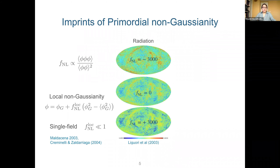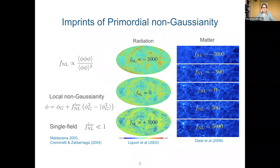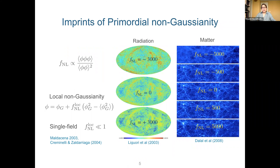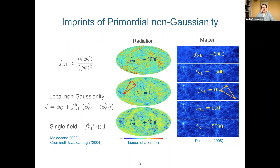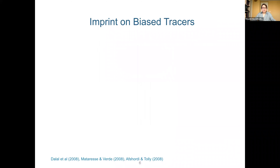Looking at the distribution of radiation and matter, having local-type non-Gaussianity with positive fNL would lead to more structure in the hot spots of the CMB, which are over-dense regions, while in the dark matter distribution, positive fNL would result in a larger number of massive halos and a delay in the formation of under-dense regions. By measuring the three-point function of radiation or matter fluctuations, we can set constraints on and infer the amplitude of the primordial bispectrum. When we talk about bias tracers — halos, galaxies, or intensity maps — there is an additional imprint that appears at the level of the two-point function, where on large scales the bias can be defined as a linear scale-independent coefficient.